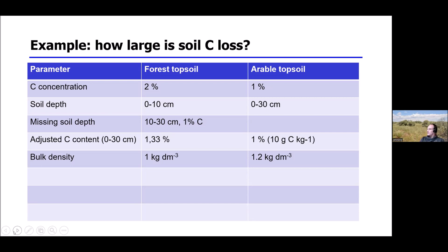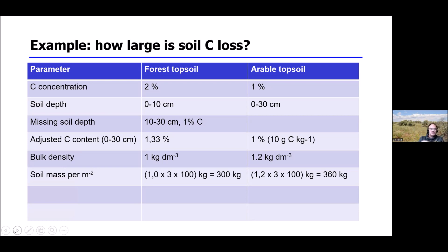In an arable soil with heavy machinery, compaction means you store more per liter — 1.2 kilograms per cubic decimeter. We can then calculate the soil mass per square meter: three decimeter depth intervals multiplied by one kilogram, then multiplied by 100 to convert from decimeter-square to meter-square, gives 300 kg/m² in the forest, and 360 kg/m² in the arable soil.